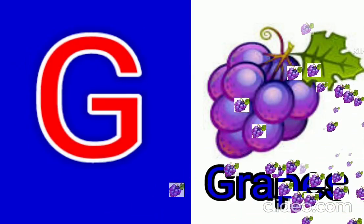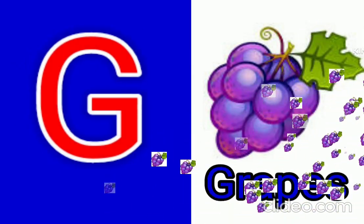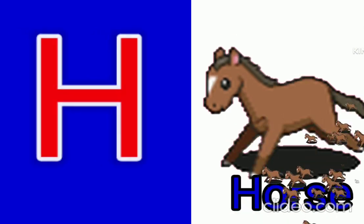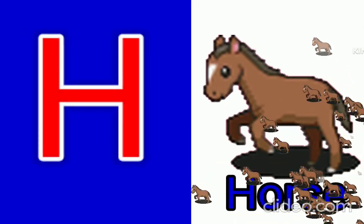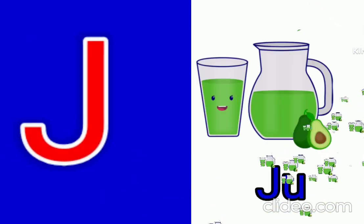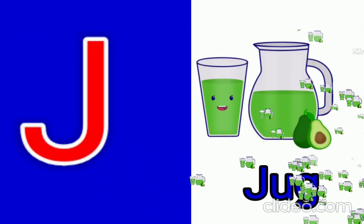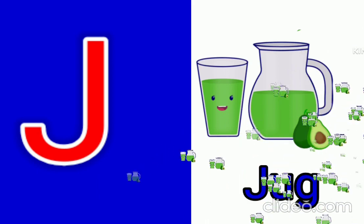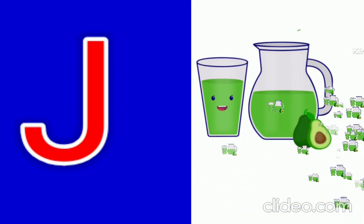G for grapes, grapes means angoor. H for horse, horse means ghola. I for ice, ice means balaf. J for jug, jug means jug.